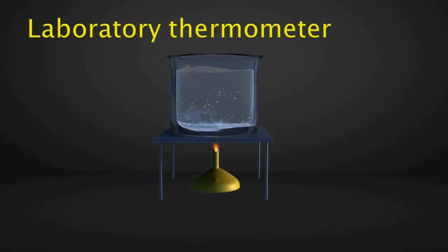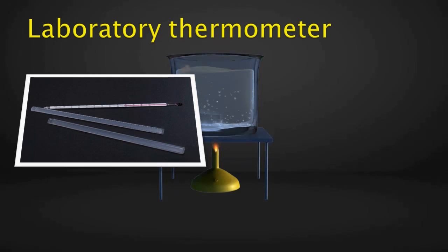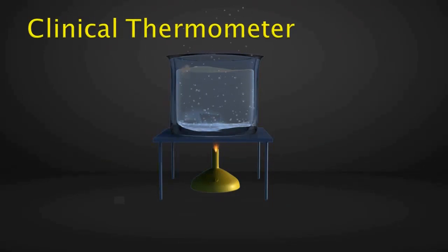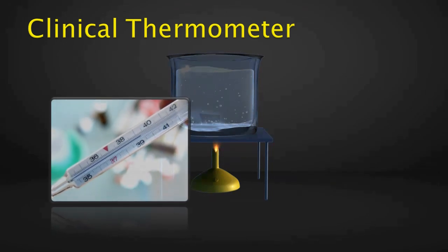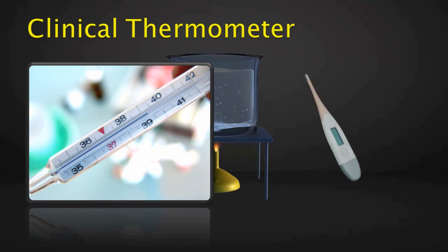Laboratory thermometer: it consists of a thin glass tube sealed at one end with a bulb at the other. Its range is from −10 degrees Celsius to 110 degrees Celsius. Clinical thermometer: the thermometer used to measure body temperature is called a clinical thermometer. It is generally a mercury thermometer, though nowadays digital thermometers are becoming very popular.